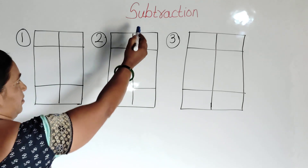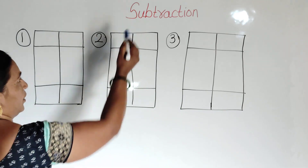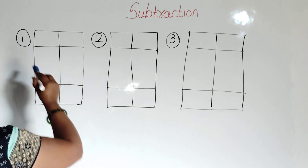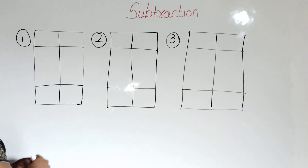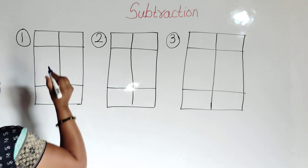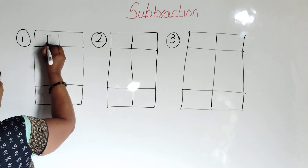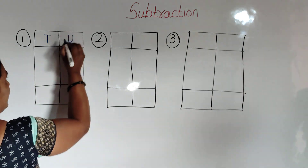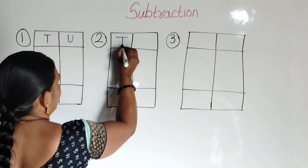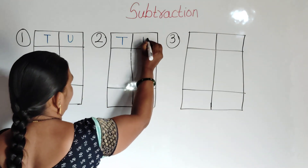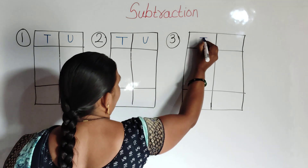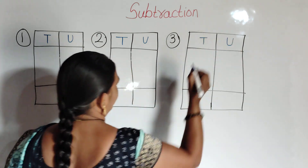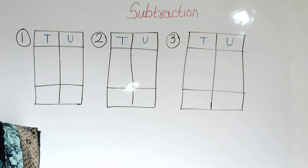Subtraction. Two digit subtraction. First example. Here tens place. Here units place. Tens and units.